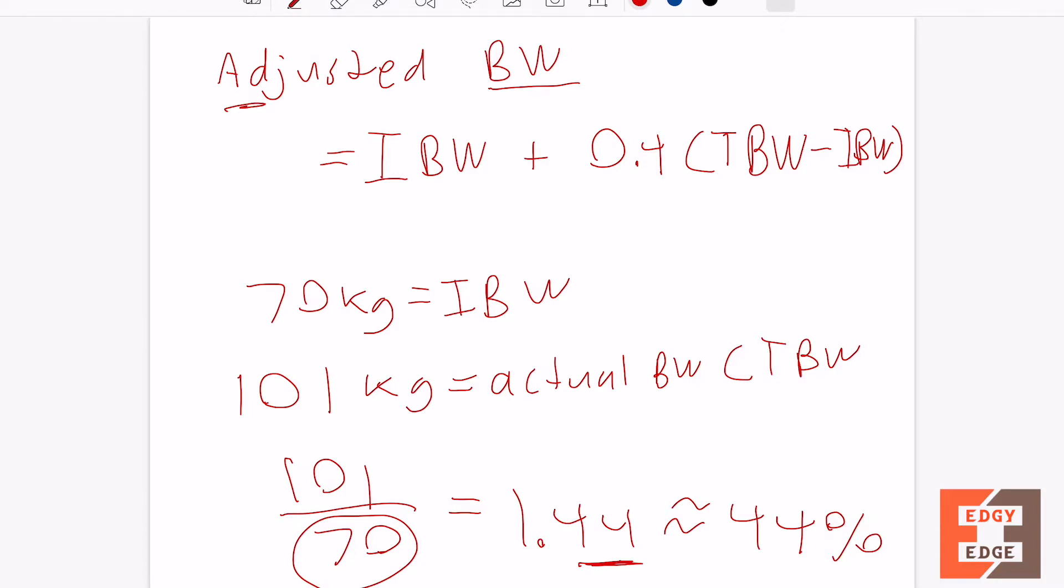It's pretty self-explanatory, plug and chug. This patient's ideal body weight, let's say it was 70, plus 0.4 of total body weight is 101, minus ideal body weight 70. Let me do a quick calculation. 101 minus 70 times 0.4 plus 70, so 82. This is equal to 82.4 kilograms.